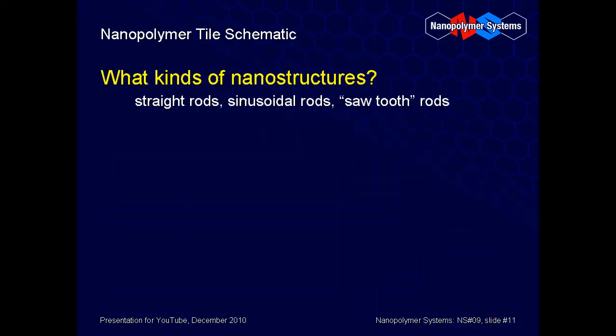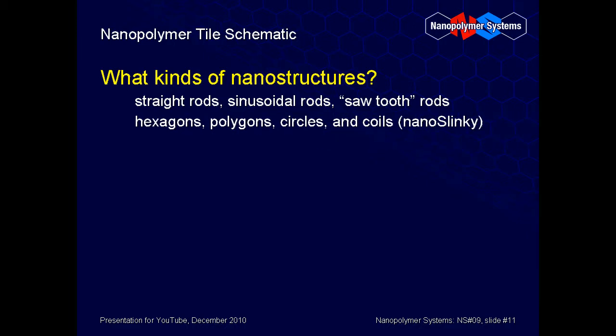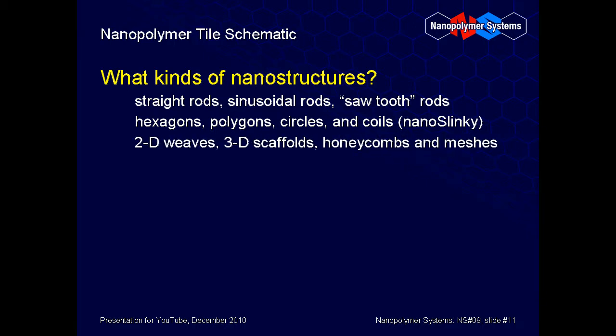In addition to the straight and sinusoidal rods and coils shown previously, a host of additional nanostructures are possible. These include geometric variations on coils with hexagonal, triangular, and polygonal cross-sections; two-dimensional weaves, matrices, and films; and three-dimensional scaffolds, honeycombs, matrices, and meshes. Details of such structures can be provided.